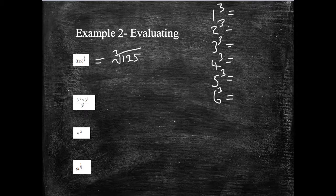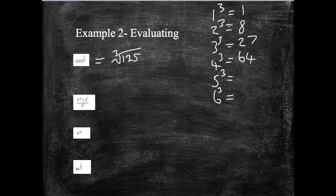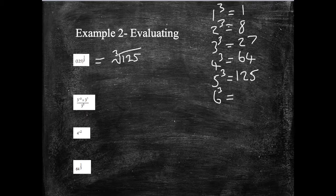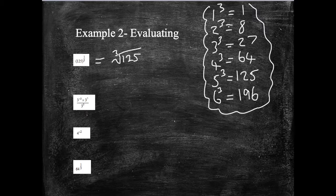1 cubed is 1 times 1 times 1, which is 1. 2 cubed is 2 times 2 times 2, which is 8. 3 cubed, 3 times 3, which is 9, times 3, again, 27. 4 times 4, 16, times 4, again, 64. 5 times 5 times 5 is 125. And 6 times 6 is 36, times 6, again, is 196. So it's worth knowing some of these just as a bit of an aside for answering these questions. So the cubed root of 125, we can see over here, is 5.